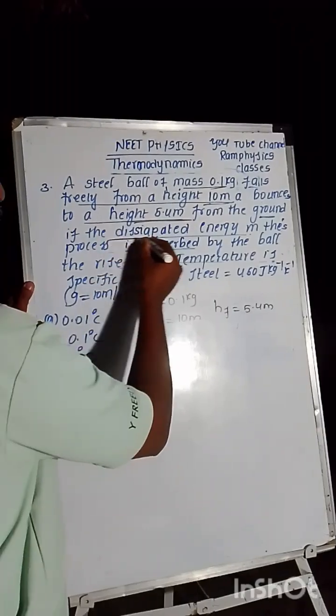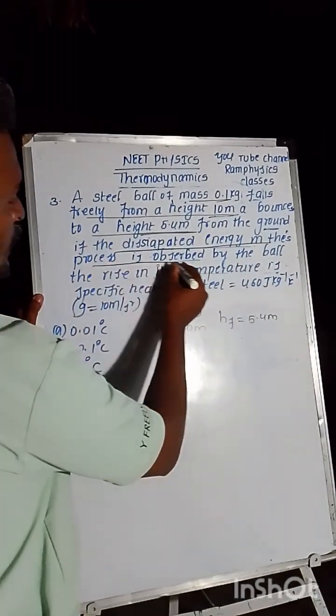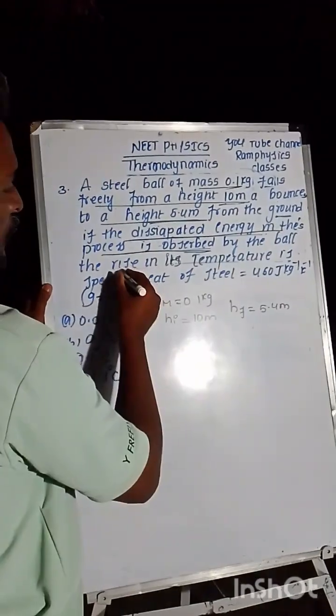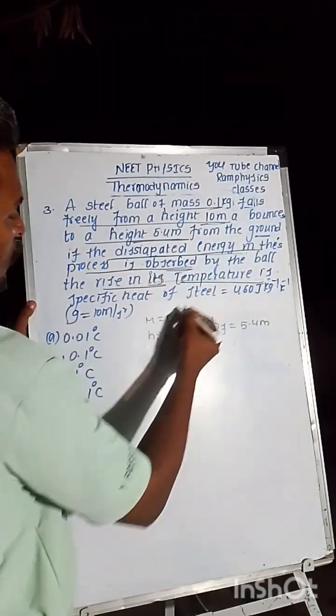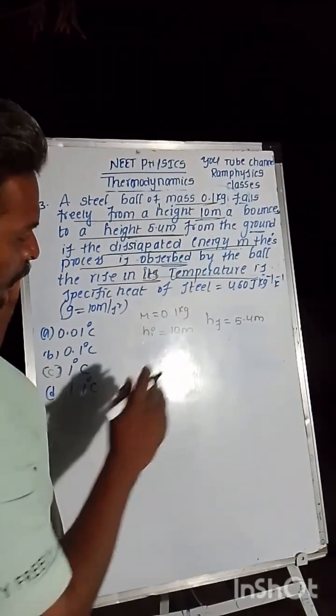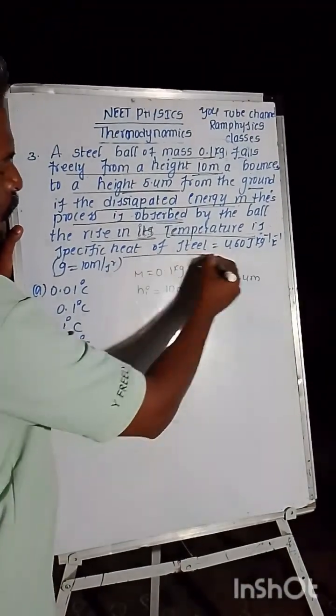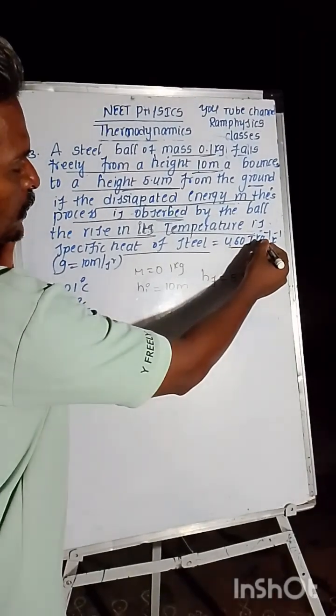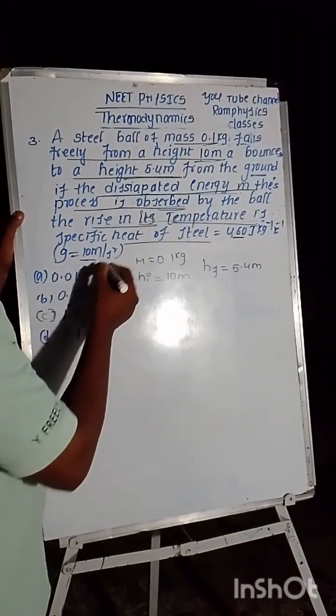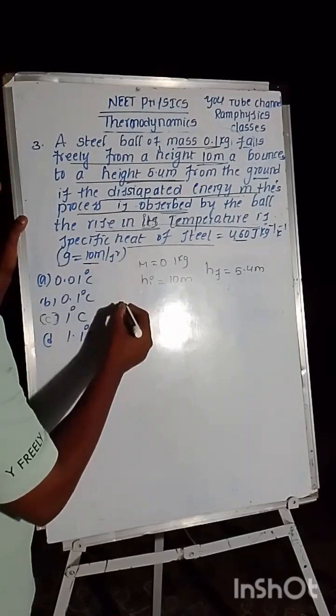So the dissipated energy of this process is observed by the ball. The rise in its temperature is how much we have to find. Given: the specific heat of steel is 460 joule per kg kelvin inverse, and gravity is equal to 10 meter per second square.